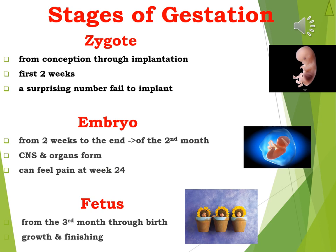Teratogens can cause harm when the developing zygote, embryo, or fetus is exposed to them — the study of teratogens is teratology. Examples include alcohol and other drugs such as caffeine, nicotine, street drugs, tobacco, and even some prescription drugs. Bacteria in foods are also a concern — pregnant women should avoid unpasteurized honey, heavily processed foods like salami, rare hamburger, and sushi. X-rays are a teratogen, which is why dental offices ask if you might be pregnant.